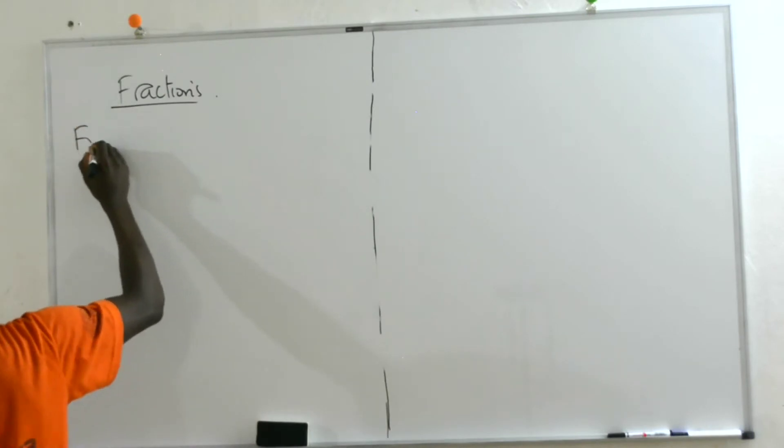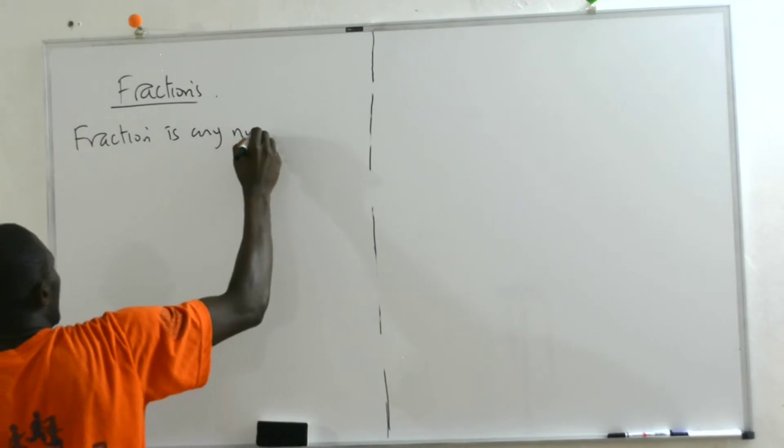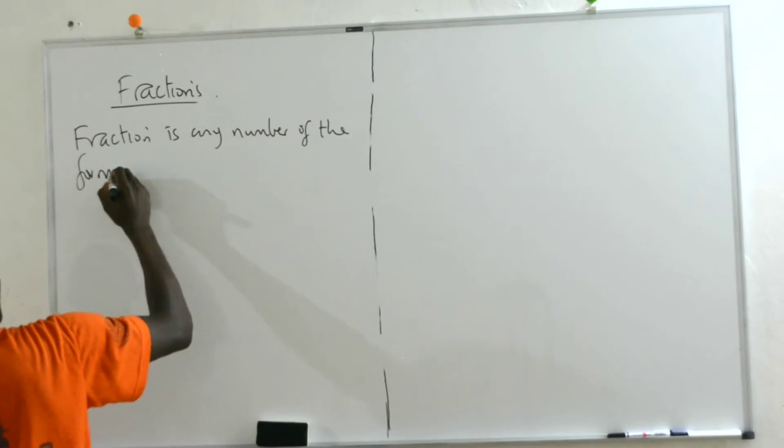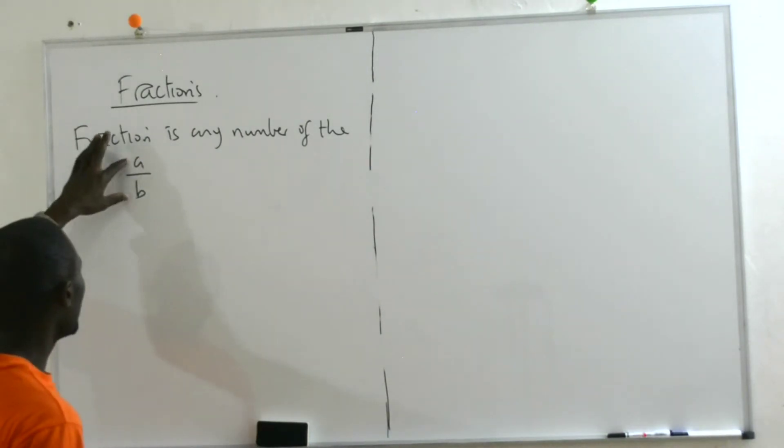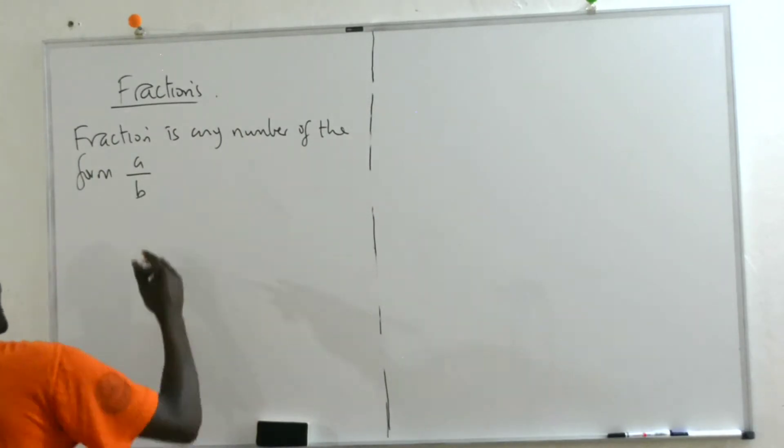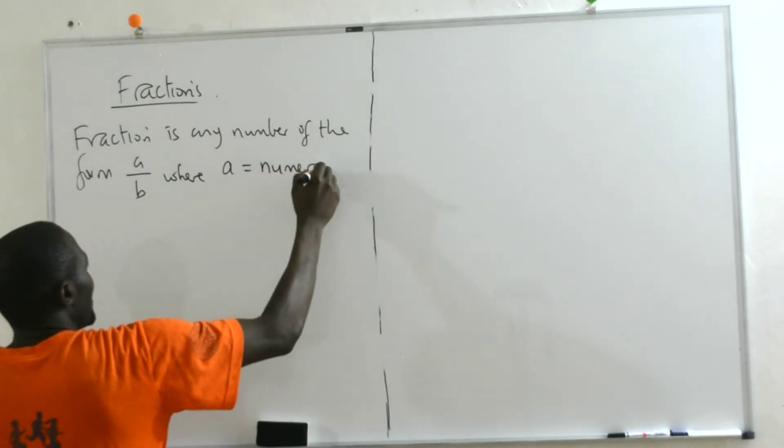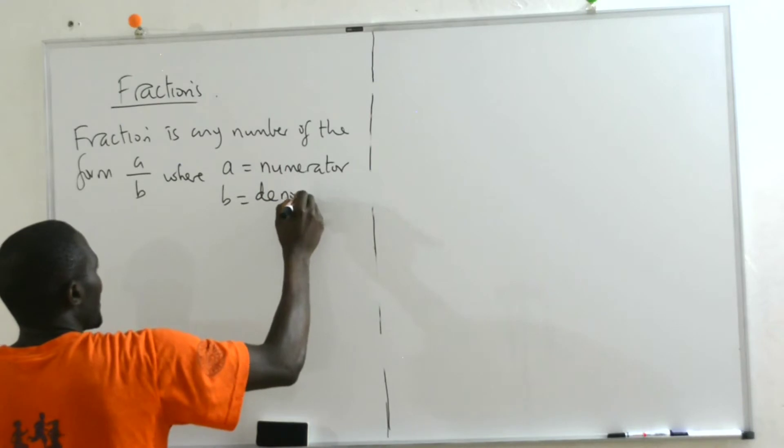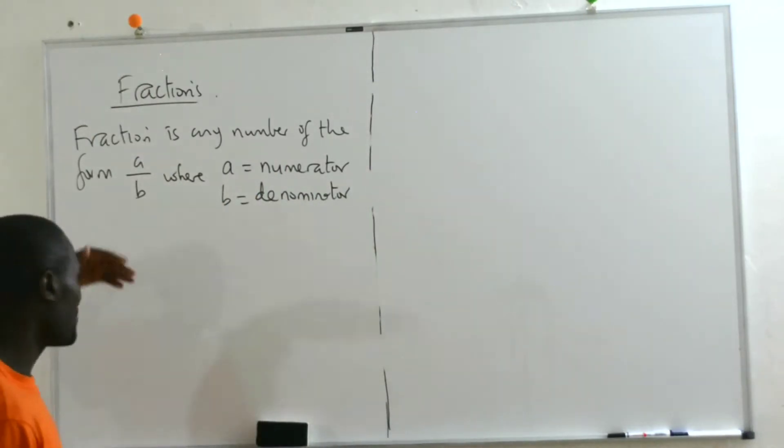Fractions. So we say fraction - a fraction is any number of the form A out of B. So A and B are variables, they can take on anything. Where we refer to A as the numerator and B as the denominator.